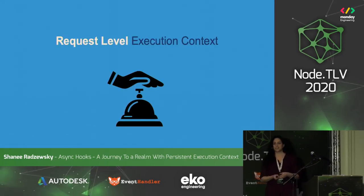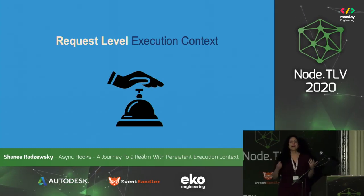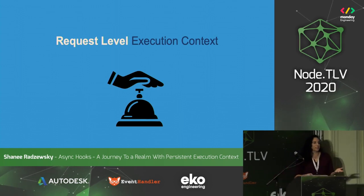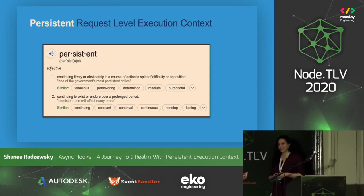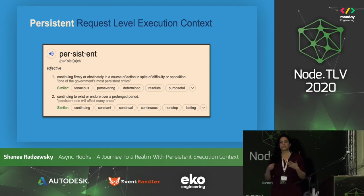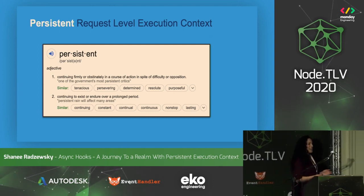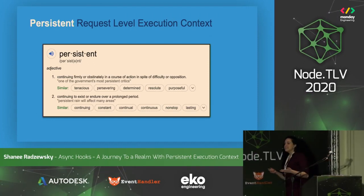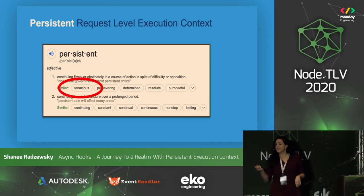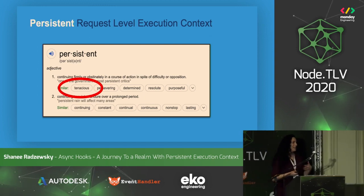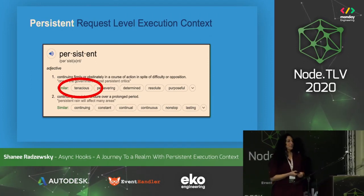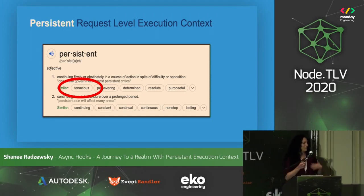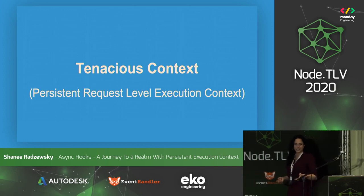Request-level execution context: we're talking about web servers, we get lots of requests, and when we have that execution context and the information we want to access, we want it to pertain to a specific request. Persistent just means it's really going to be accessible to us regardless of where we are in the flow of our code. I looked up 'persistent' and found that 'tenacious' is a synonym — it has an undertone of overcoming hardship and being dependable. So let's call this tenacious context, or tenacious C.